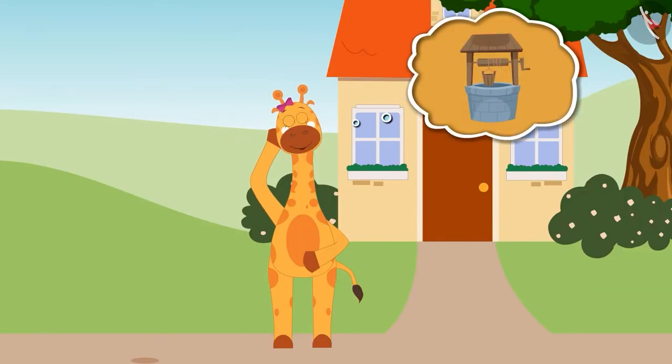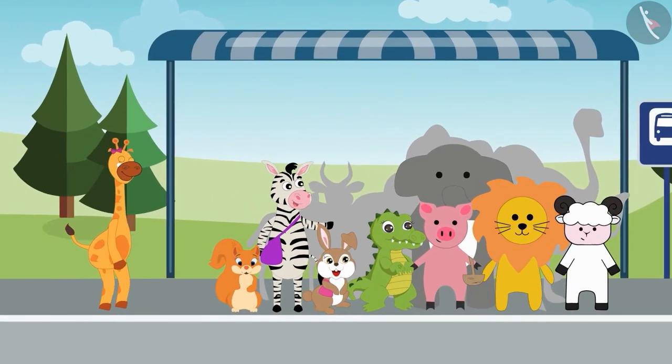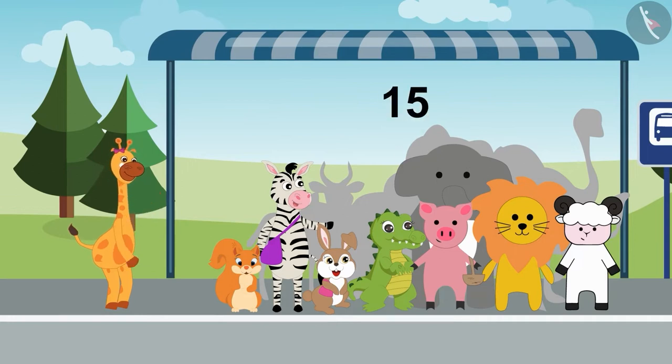To reach the well, we need to cross the bus stop. There were a lot of animals at the bus stop. Giraffe started counting the number of animals at the bus stop and learned that there were 15 animals at the bus stop.